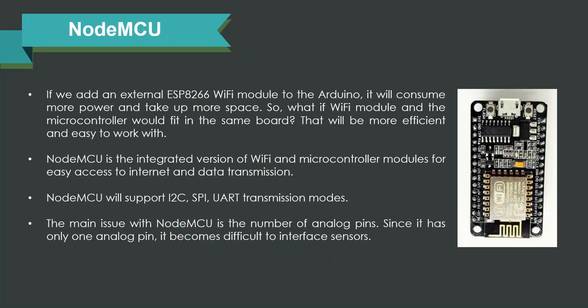The normally preferred module is the ESP8266 Wi-Fi module, which has to be connected with the Arduino Uno or Nano board for Wi-Fi connectivity. NodeMCU is one of the most preferred and affordable boards for building prototypes and proof of concepts. It is very inexpensive and at the same time very effective. Adding an ESP8266 Wi-Fi module to an Arduino board consumes more power, takes up more space, and could also cost you more.